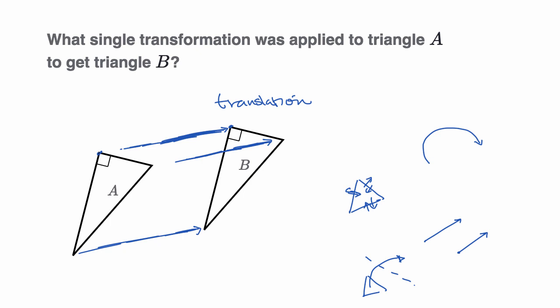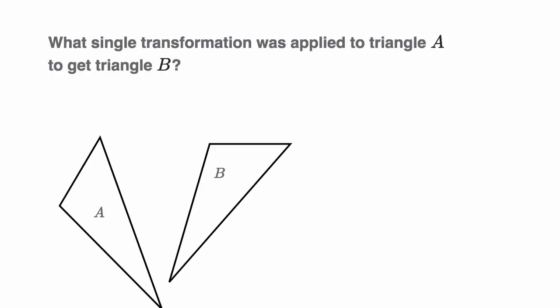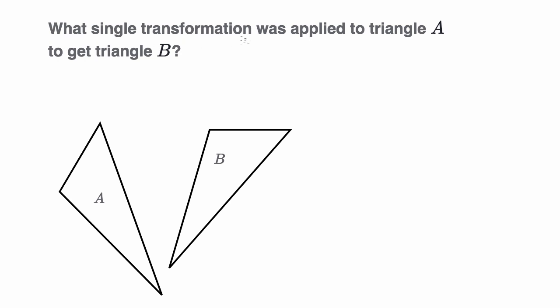Let's do another example. What single transformation was applied to triangle A to get to triangle B? So if I look at these diagrams, this point seems to correspond with that one. This one corresponds with that one. So it doesn't look like straight translation because they would have been translated in different ways. So it's definitely not a straight translation.